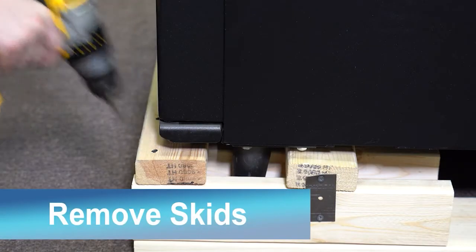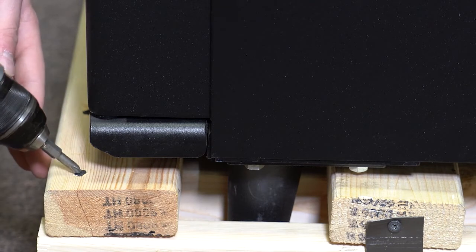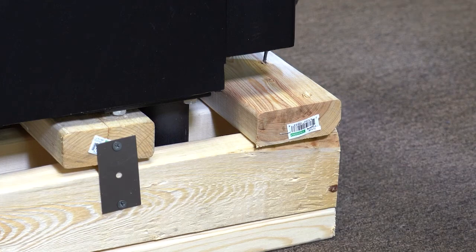Follow these steps to remove the shipping skids. Use a Phillips head screwdriver or powered screwdriver to remove the screws on both cross boards and lift the boards out.